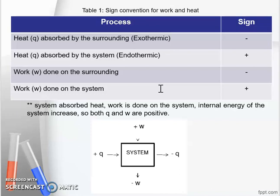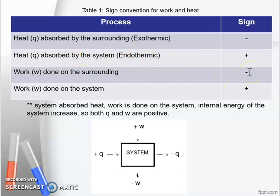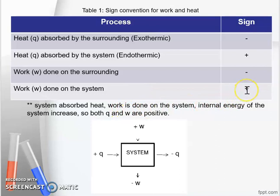To calculate delta E, it is important to know the sign convention for work and heat. If heat is absorbed by the surrounding, it is an exothermic process and the sign is negative. If heat is absorbed by the system, it is an endothermic process and the sign is positive. For work: if work is done by the system, the sign is negative, and if work is done on the system, the sign is positive. So if the system absorbs heat, the sign is positive, and if work is done on the system, the sign is also positive, meaning the internal energy of the system will increase.